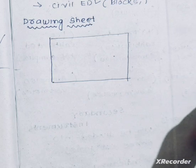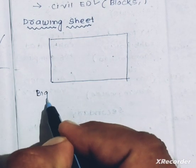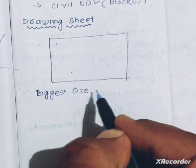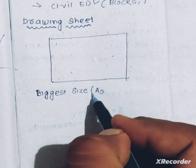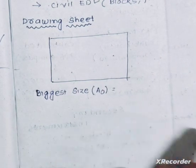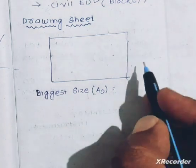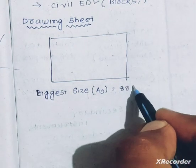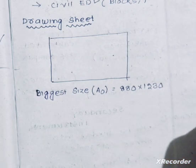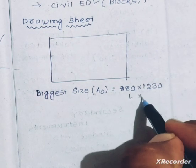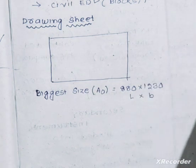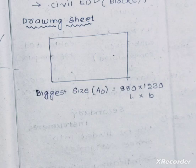The drawing sheet's biggest size is A0. What is the biggest size of the drawing sheet? The biggest size is A0. What is the dimension? 880 mm x 1230 mm. This is the length. This is the biggest size of the drawing sheet.